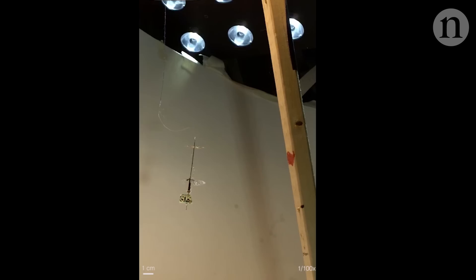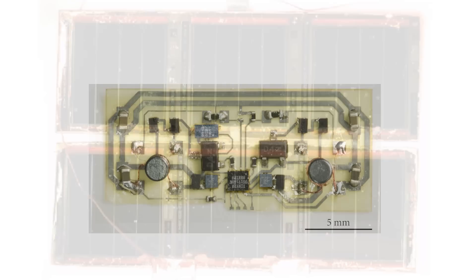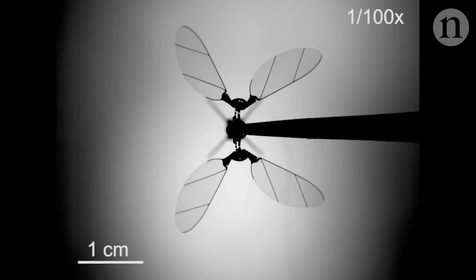At this scale, batteries are just too heavy to be carried on board, so the researchers used ultra-lightweight solar cells. These generate power and send it to a control board that operates a pair of piezoelectric actuators – clever materials that work a bit like a muscle and contract when a voltage passes across them.